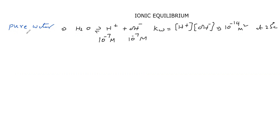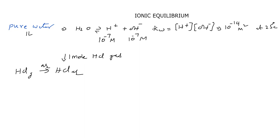Let us consider we have taken one liter of pure water and we pass one mole of HCl gas into it. One mole of HCl gas dissolves in the pure water and becomes a 1 molar HCl aqueous solution, because one mole of HCl is in one liter of water. This HCl dissociates to give H⁺ aqueous and Cl⁻ aqueous.